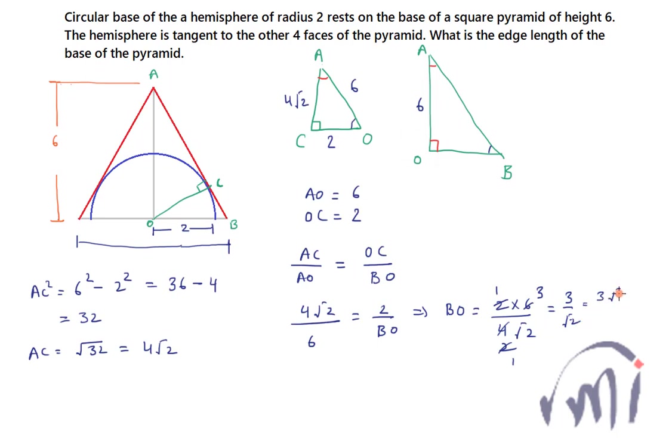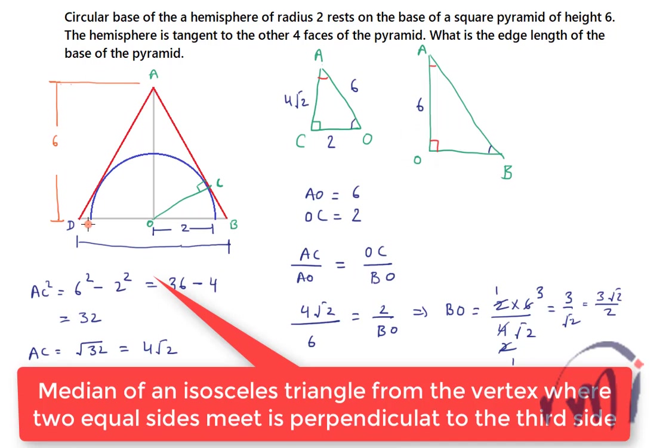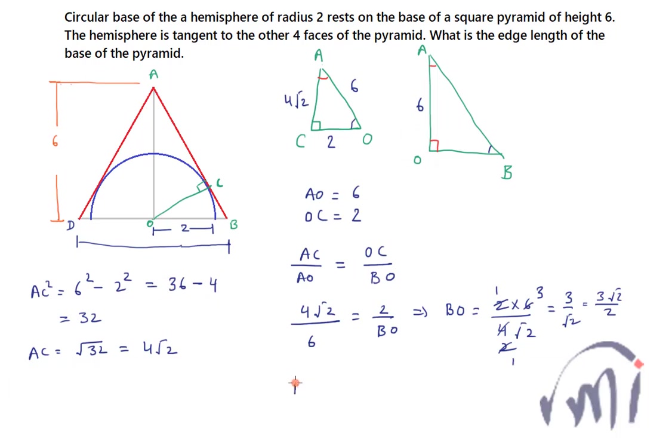And the total length of the base will be DB which will be double of the length OB or BO. So DB, which is the length of one side of the square face of the pyramid, will be equal to 2 times BO.